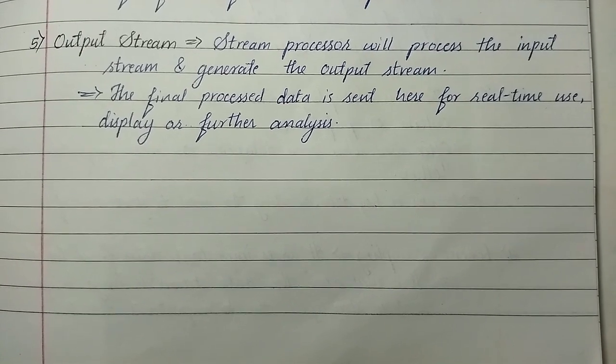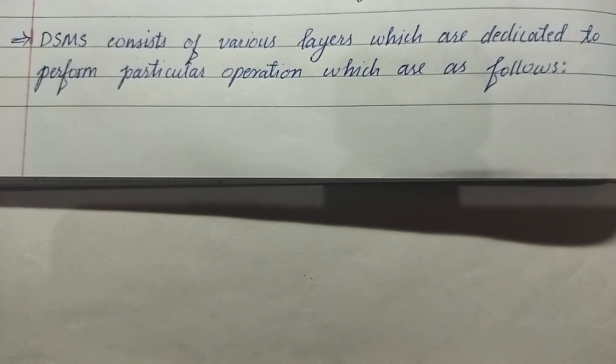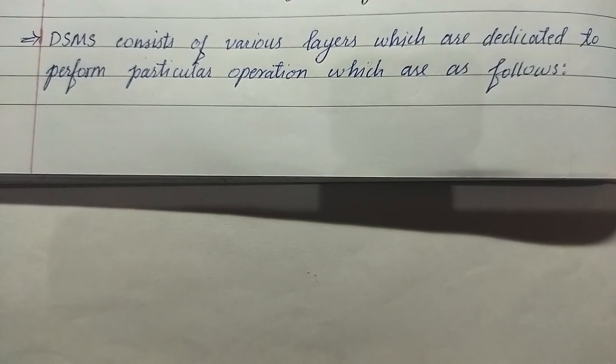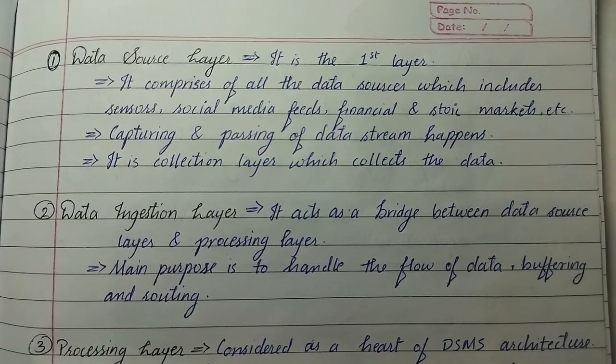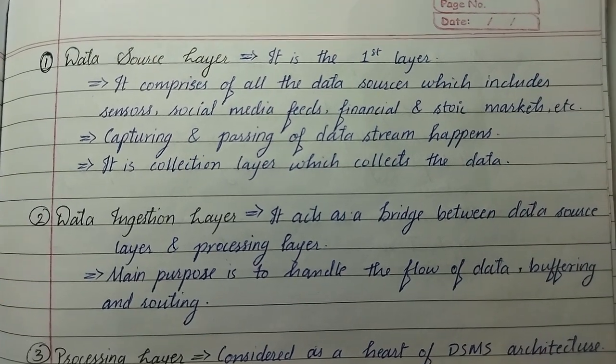DSMS consists of various layers which are dedicated to perform particular operations. First one is data source layer. It is the first layer. It comprises all the data sources which includes sensors, social media feeds, financial and stock market, etc.